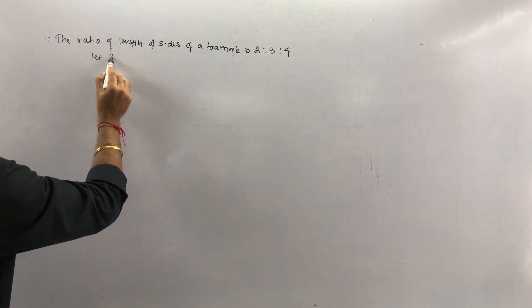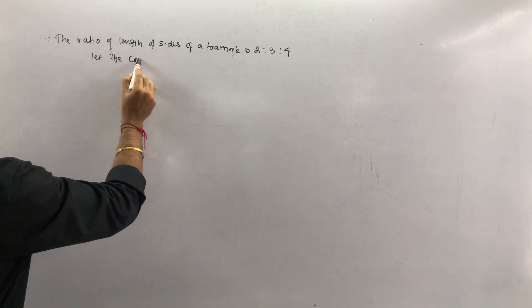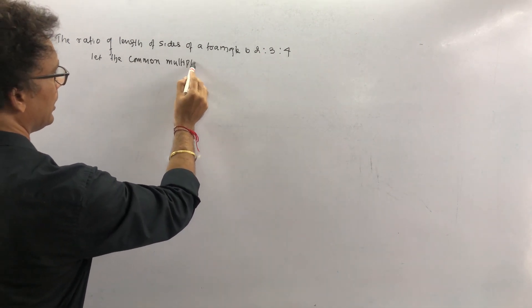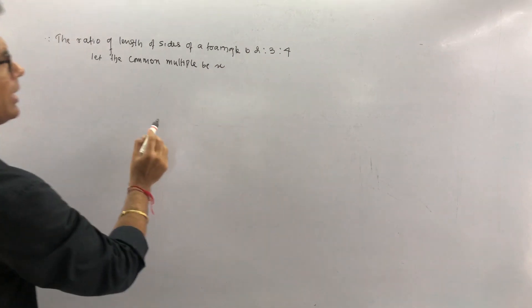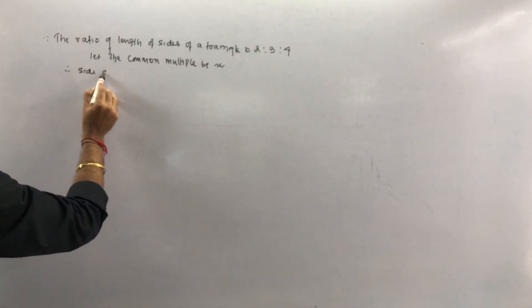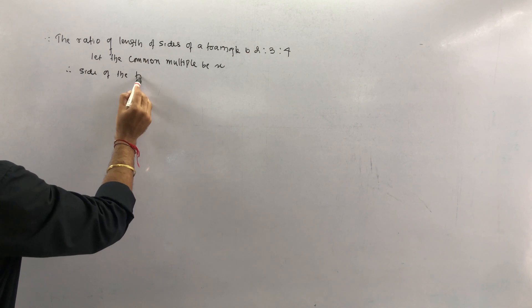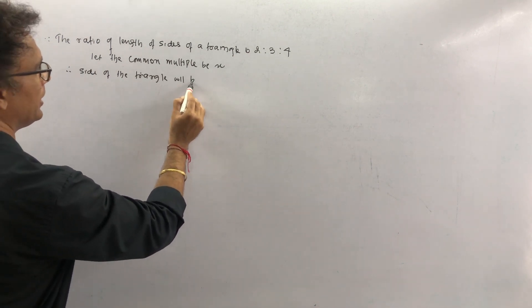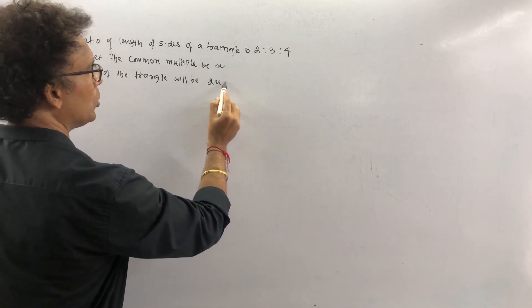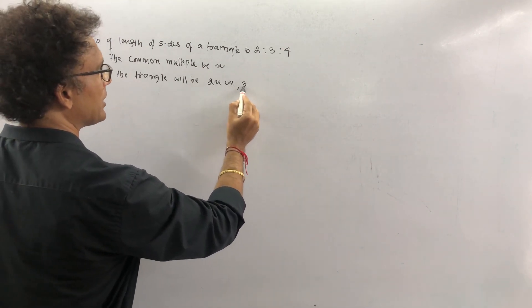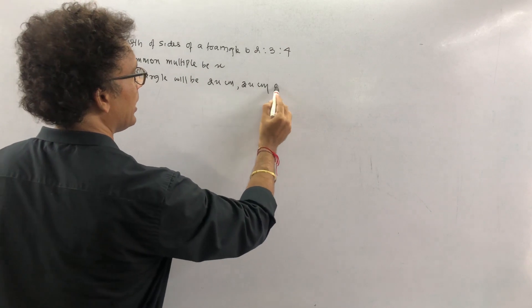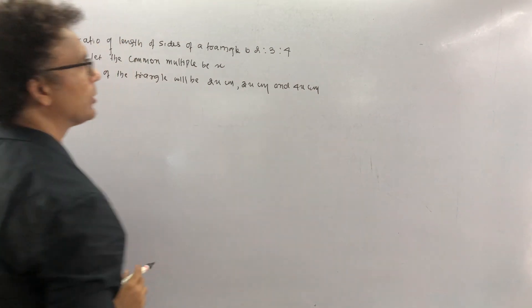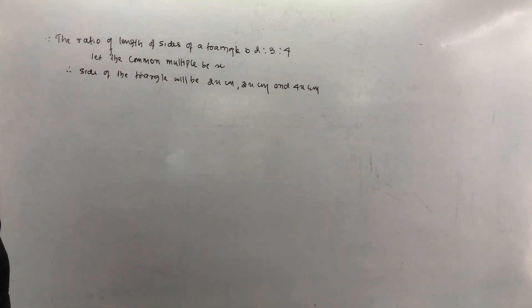Let the common multiple be x. Therefore the sides of the triangle will be 2x cm, 3x cm, and 4x cm.